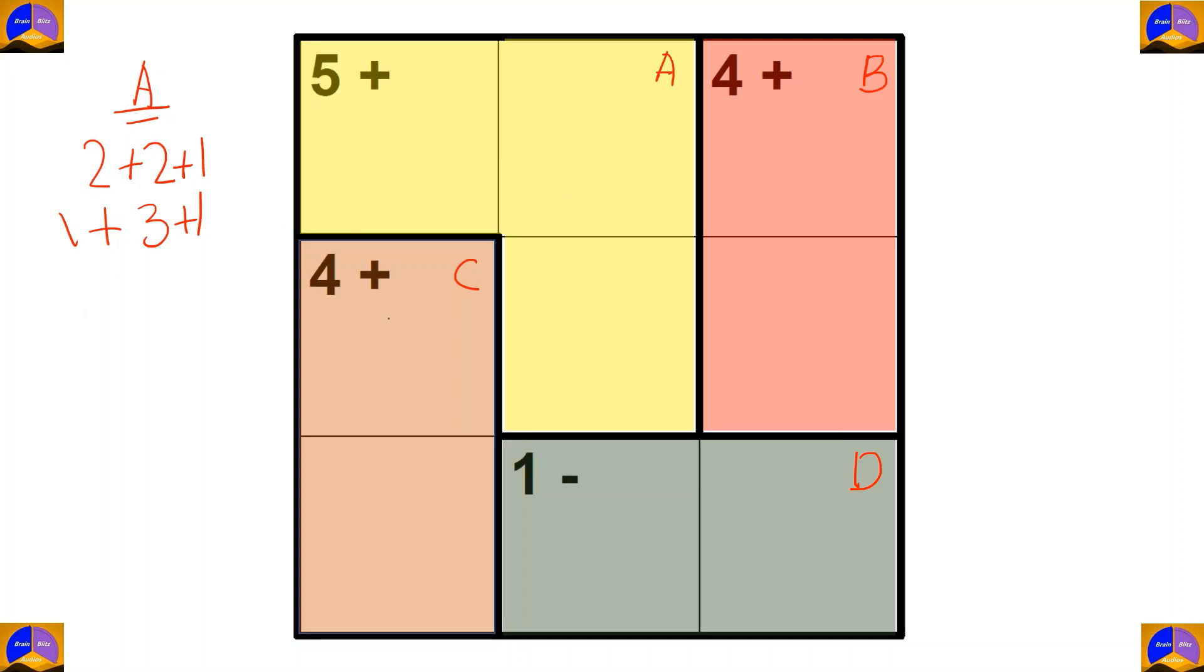In cage B and C, as cage B and C are the same, we will write the options for it similarly. So, for both of the cages there are 2 cells and the operation is addition. After the operation, our result must be 4. So, there is only 1 option, 3 plus 1.